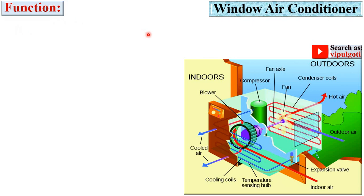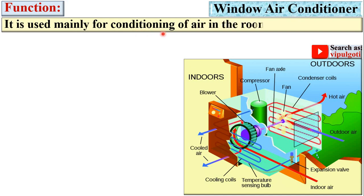So let's start with the function of window air conditioner. And here you can see the different components of the window air conditioner. It is used mainly for conditioning of air in the room.